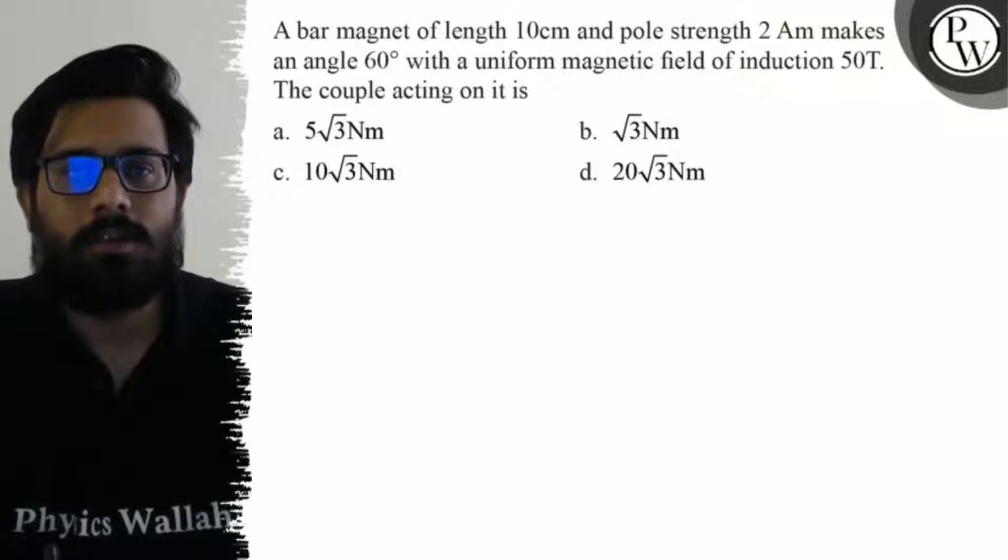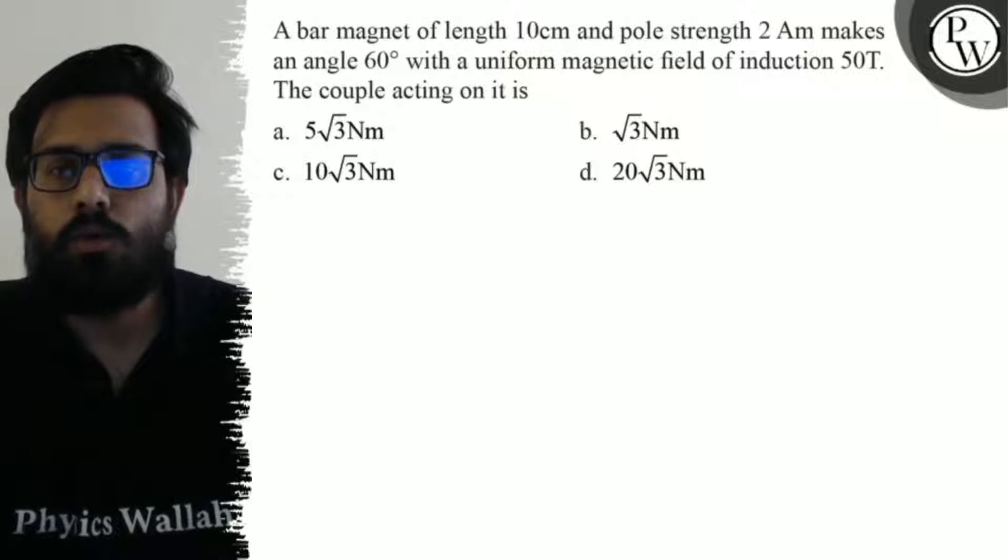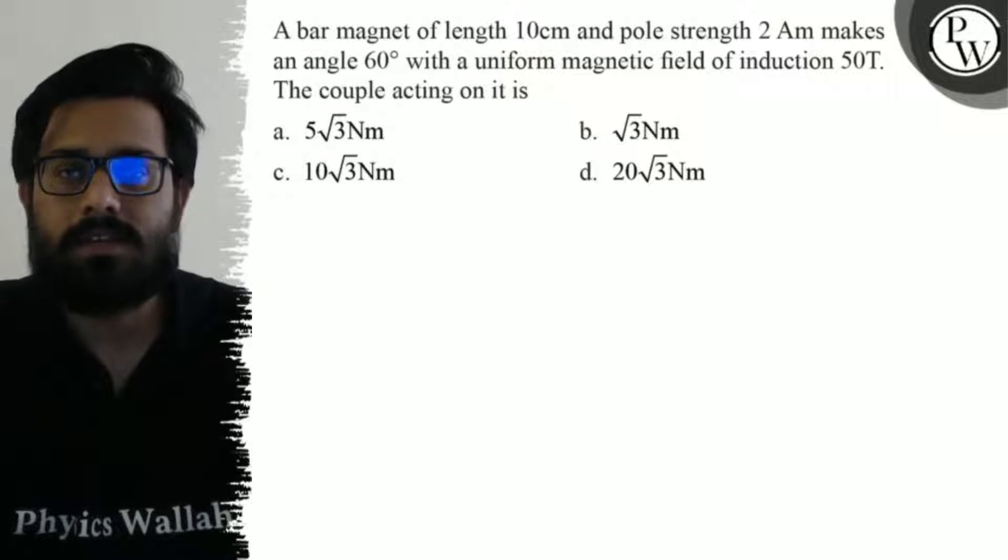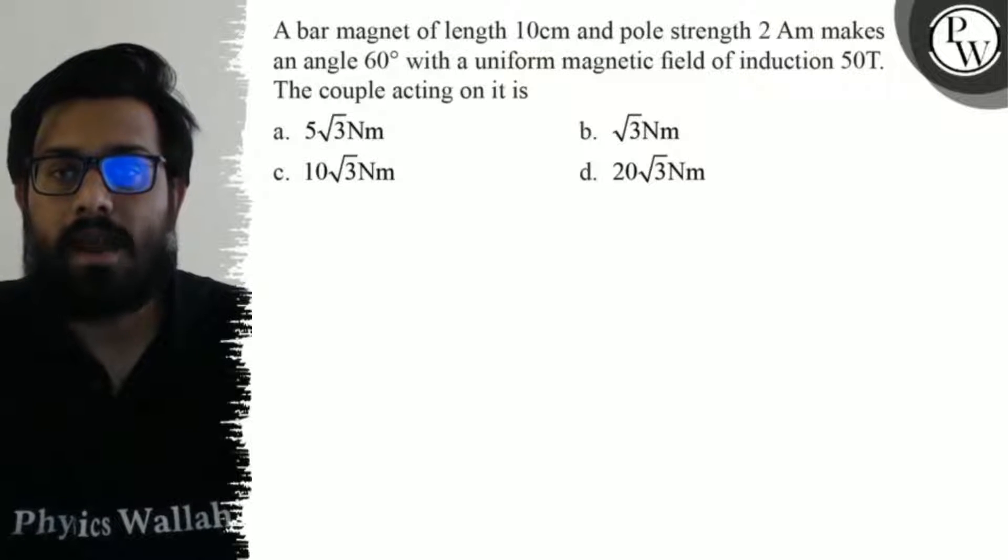Hello Bacho. So let's see the question. A bar magnet of length 10 centimeter and pole strength 2 ampere meter makes an angle of 60 degree with a uniform magnetic field of induction 15 tesla.